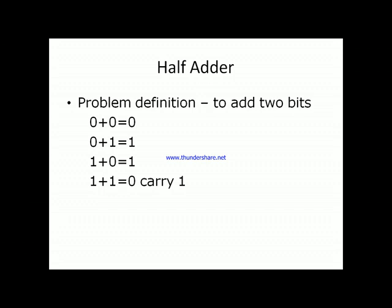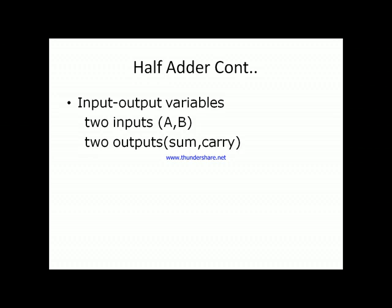For two bits we have four combinations: 0+0=0, 0+1=1, 1+0=1, and 1+1 gives sum=0 and carry=1. This is the problem definition of the half adder. From the problem definition we can identify the required inputs and outputs — the half adder adds two bits, so we require two inputs, let us call them A and B.